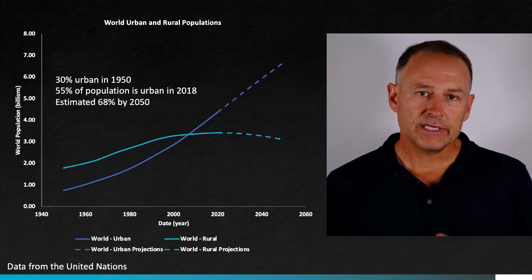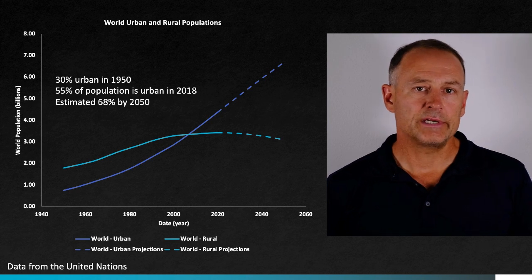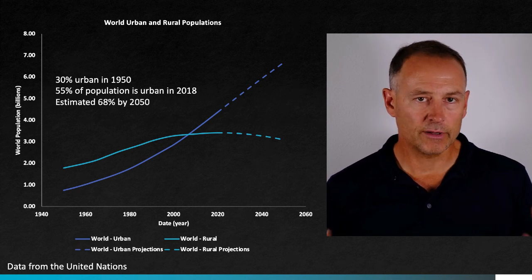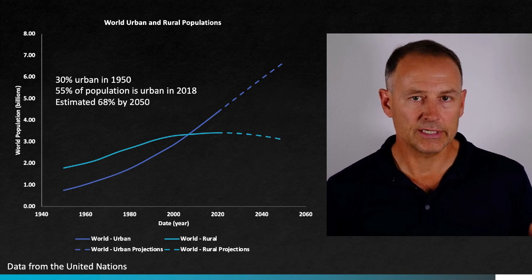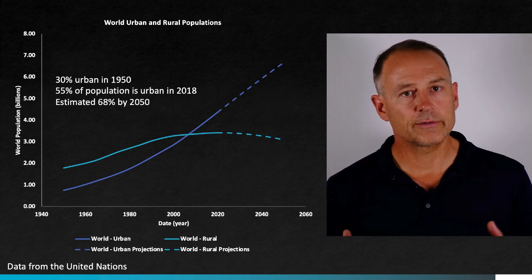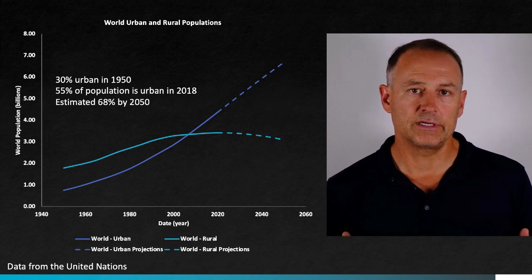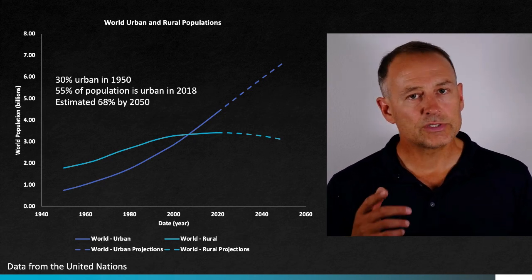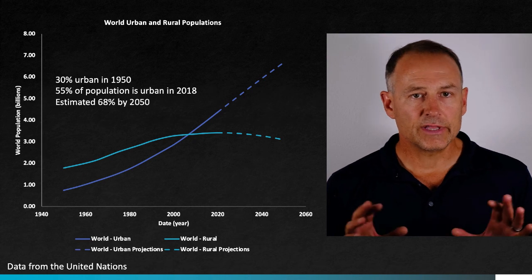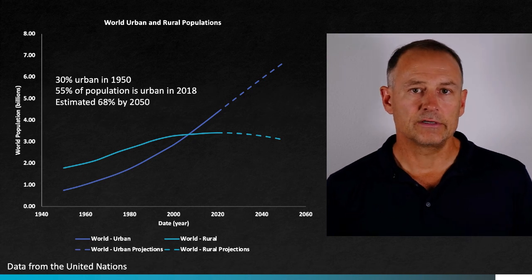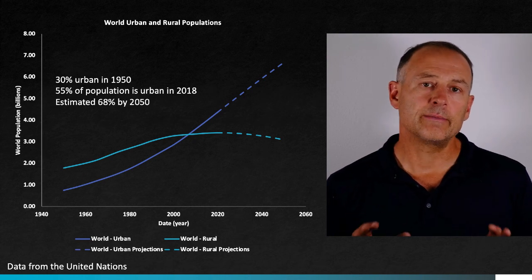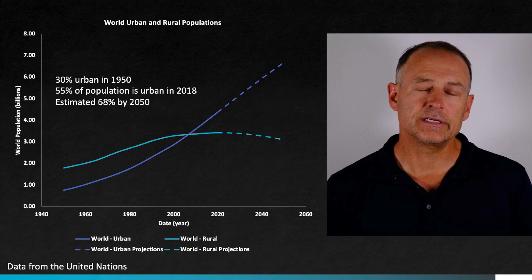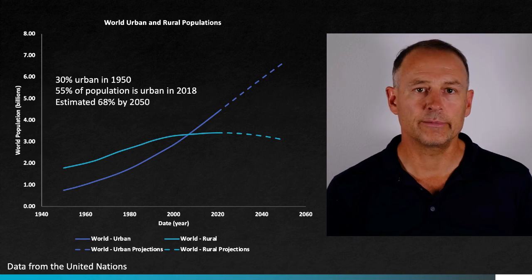As you see in these graphs, there are two patterns happening simultaneously. First, the global population is increasing, and so both rural and urban curves have been going up for the last 70 years. But what's really notable is that over the next 30 years, the projections say that people will actually leave rural areas and move to cities.